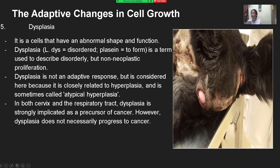In summary, when cells are exposed to stresses that disturb the cell's normal state or homeostasis, this leads to cell adaptation. Adaptations can be physiologic or pathologic, and there are four distinct adaptive responses: hypertrophy — increase in cell size; hyperplasia — increase in cell number; atrophy — decrease in cell size; and metaplasia — change in cell type. That's our presentation for cell adaptation.